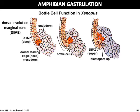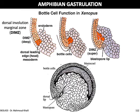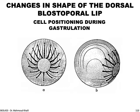The blastocoel is ultimately displaced to the side opposite the blastoporal lip, and the archenteron is formed. Figures show that the dorsal involuting marginal zone has two layers: a deep layer and a superficial layer. Bottle cells involute inward first, and cells roll inside until all have been internalized. The dorsal lip is shown forming, with bottle cells as the first cells to internalize into the blastocoel.